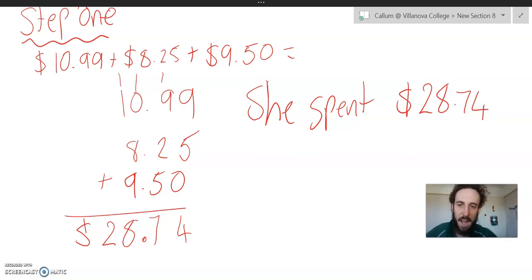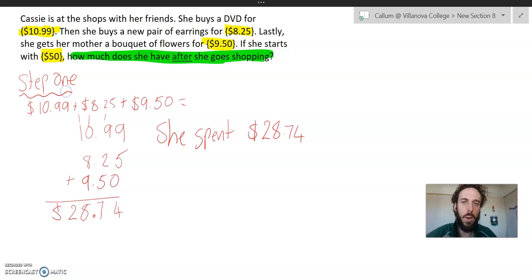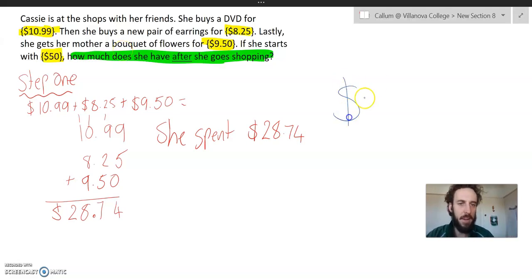And heaps of guys will stop there. And they'll go, yay, maths is done. Sell 5. I'm awesome. Those people are silly because they didn't read the rest of the question. Question says, if she starts with $50, how much does she have after she goes shopping? So I know that to find that, I'm going to need to take my $50 that she started with, and I'm going to need to subtract what she spent, which is $28.74.